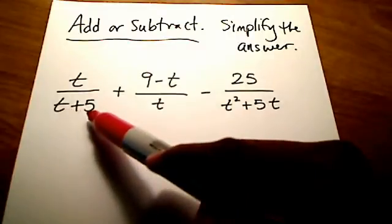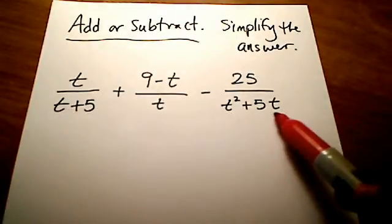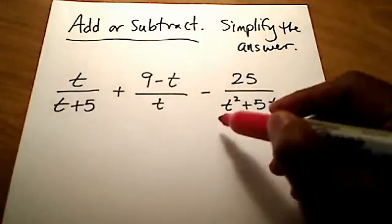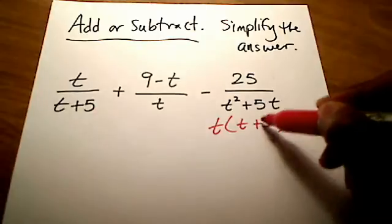Well, t plus 5, I can't factor that anymore, and t is just sitting there by itself. I can't factor that. But this denominator over here, I can simplify a little bit more, and if I yank out a t, if I factor it out, I'm left with t plus 5.